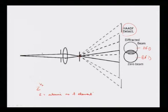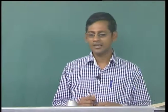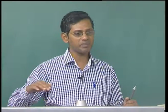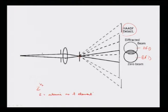Therefore, these HAADF detectors, by collecting and displaying the signal, tell us about the chemical composition of phases present in the specimen. The microscope described earlier has a HAADF detector that takes signals coming from the specimen at a slightly larger angle than the commonly diffracted beam in an annular detector configuration and displays them on the computer screen.